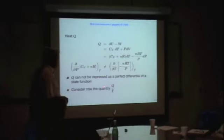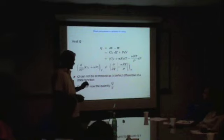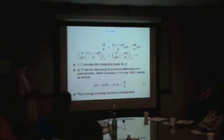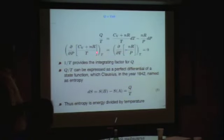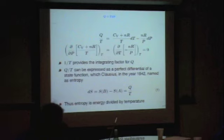What Clausius did was: if you divide heat by temperature, then this quantity can be expressed as the differential of a state function. He called that state function entropy. Dividing Q by T, he discovered a new thermodynamic variable called entropy in this process. If you take the derivative with respect to pressure and with respect to temperature, they are equal. So 1 over T provides the integrating factor for Q, and Q over T can be expressed as a perfect differential of a state function which Clausius in the year 1842 named entropy.